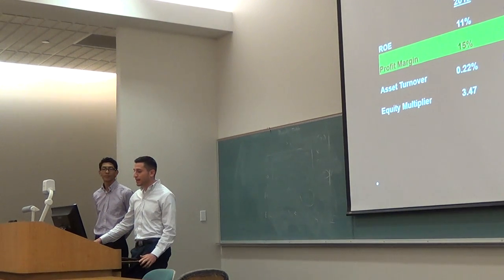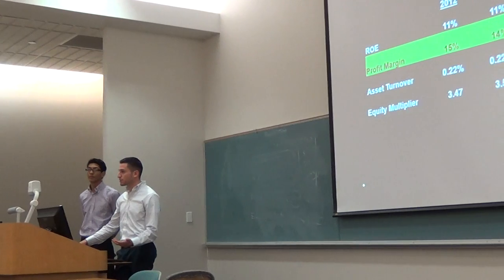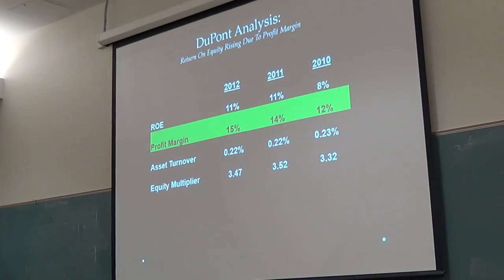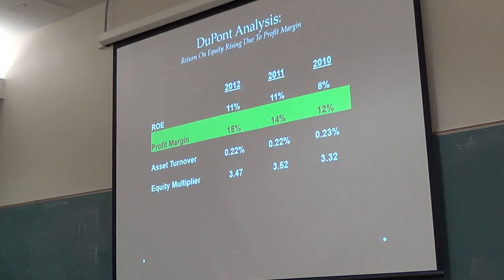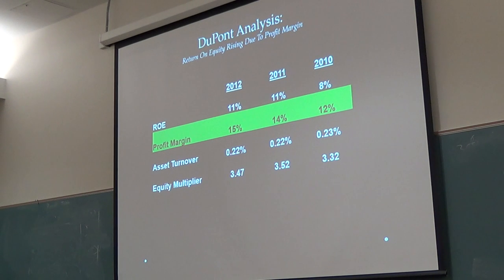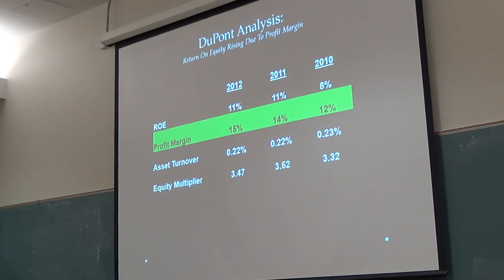We did a snapshot of the DuPont analysis. Their return on equity has been increasing, driven by three components: profit margin, asset turnover, and equity multiplier. The equity multiplier is the debt component — if the equity multiplier is going up and the rest are going down, that's a bad sign. But that's not the case with Tanger; their return on equity is mostly due to their profit margins increasing.